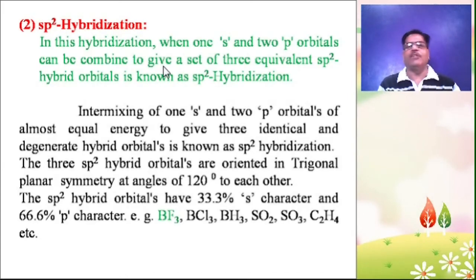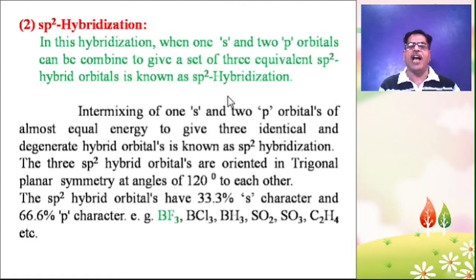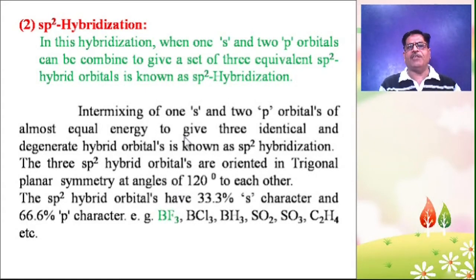Let's discuss SP2 hybridization. In this hybridization, when 1S and 2P orbitals are combined to give a set of three equivalent SP2 hybrid orbitals, it is known as SP2 hybridization. Intermixing of 1S and 2P orbitals of almost equal energy gives three identical and degenerate hybrid orbitals. The three SP2 hybrid orbitals are oriented in trigonal planar symmetry at an angle of 120 degrees to each other.